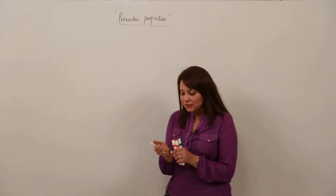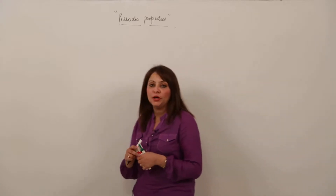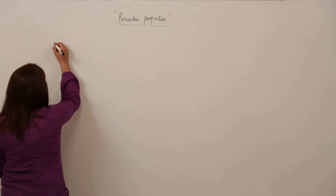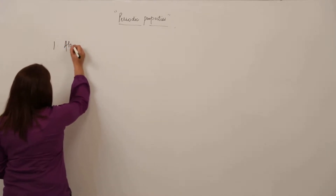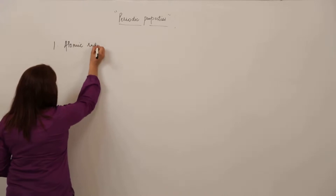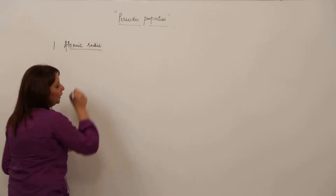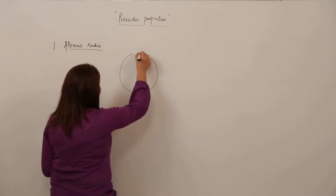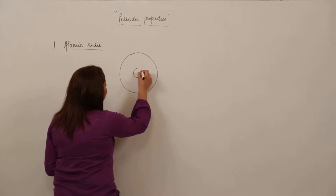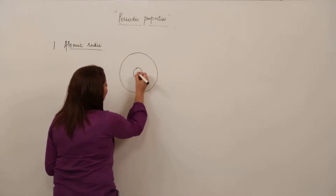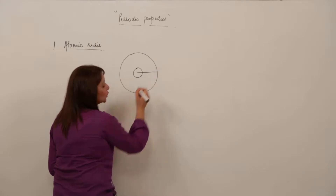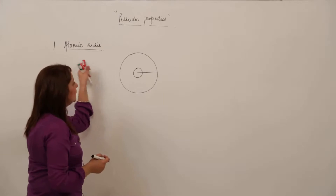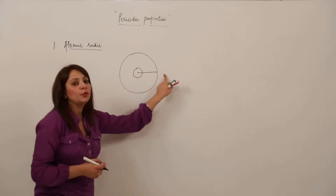Now we are taking up the periodic properties. We have various periodic properties that an element can show. The first property we are taking into consideration is atomic radii. What does atomic radii mean? We assume the atom to be a sphere. The distance from the center of the nucleus to the outermost shell is called atomic radii.